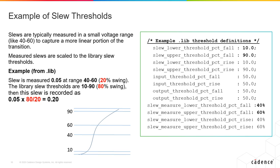So, this rate of transition or slew is recorded as 0.05 times 80 over 20, which is 0.20.